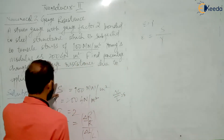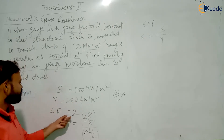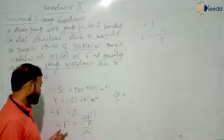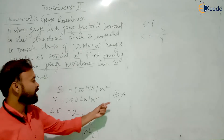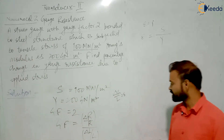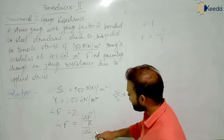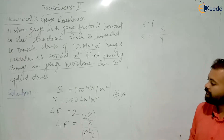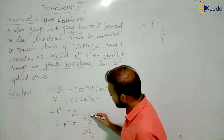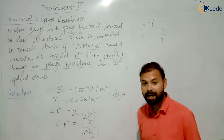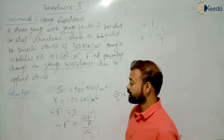The quantities given are: stress is equal to 100 MN per m², Young's modulus is 200 GN per m², and gauge factor is equal to 2. We know the formula of gauge factor: gauge factor equals delta R by R divided by delta L by L, and delta L by L is equal to epsilon, which is nothing but strain. So if you can calculate delta R by R, then multiplying it by 100 gives you the percentage change in gauge resistance.